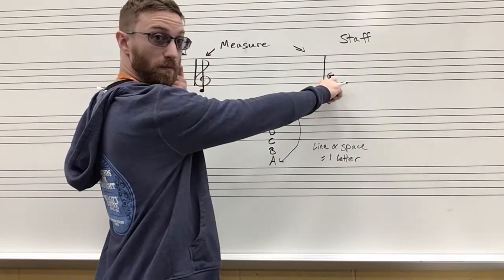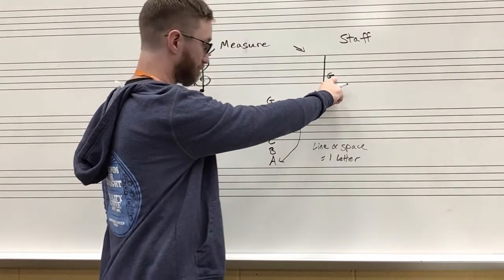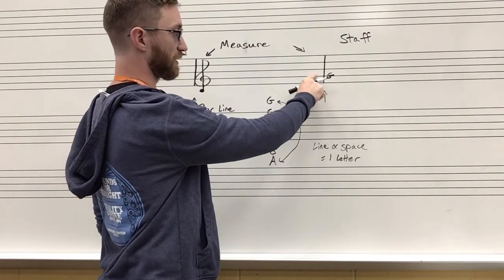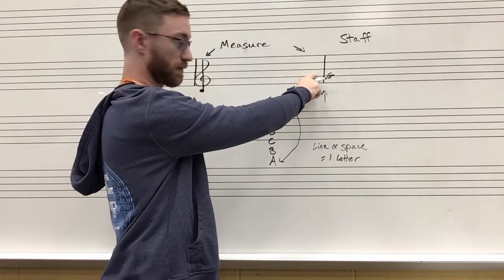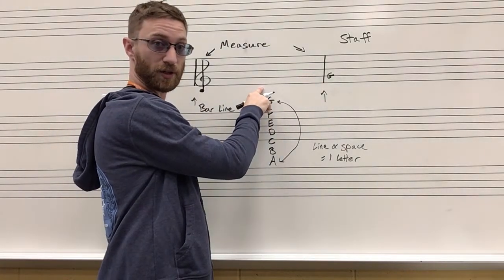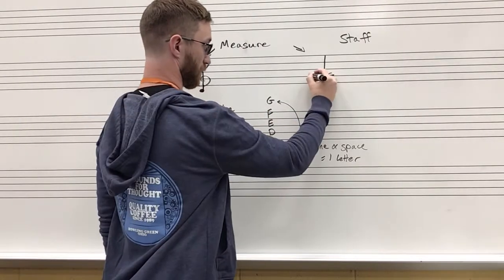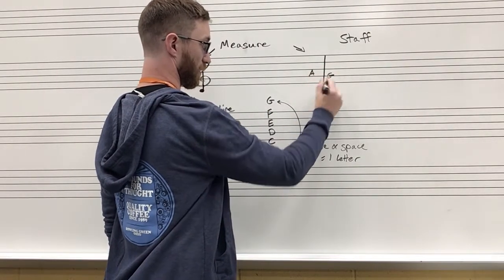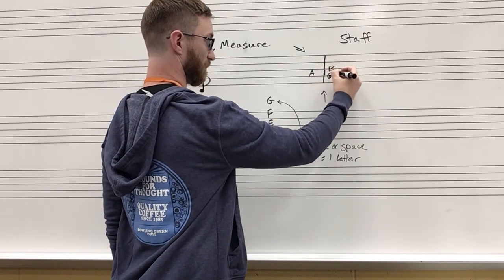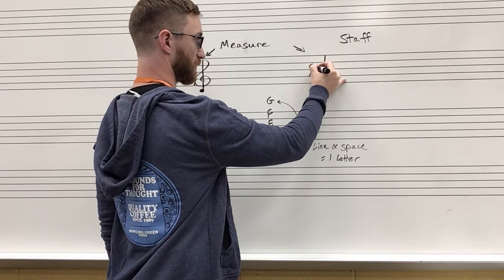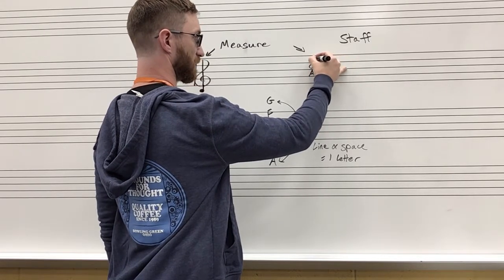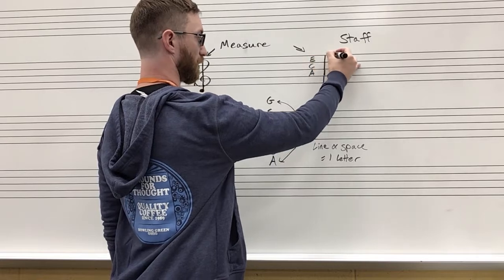So I start on the line that is a G. That is going to get one letter. I go up to the next space and I go up, since there's no more notes after G, I start at A. I go up to the next line, that gives me the note B. Space C, line D, space E, line F.